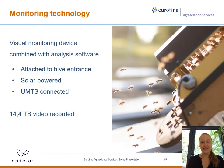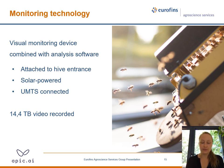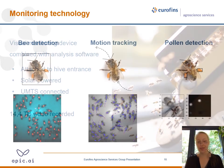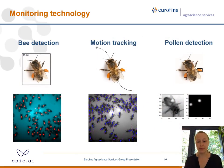Each of the eight hives in the study was equipped with a digital monitoring device. It is a combination of hardware and software. The hardware is a camera which films all bees leaving and entering the hive. The software is used to analyze the footage recorded. The devices themselves are solar powered, which means they are self-sufficient.